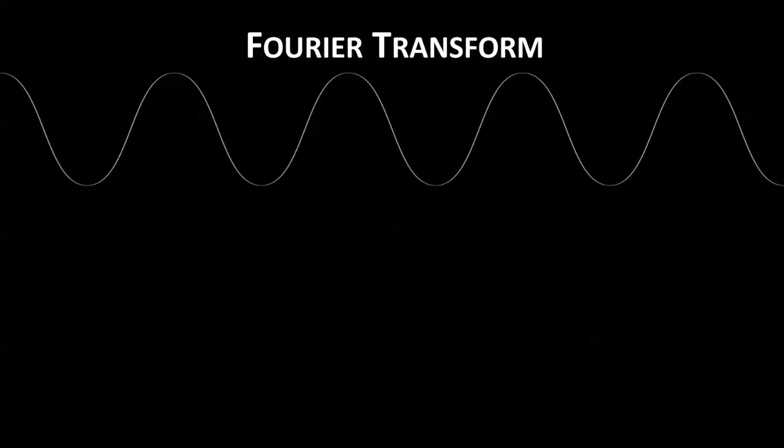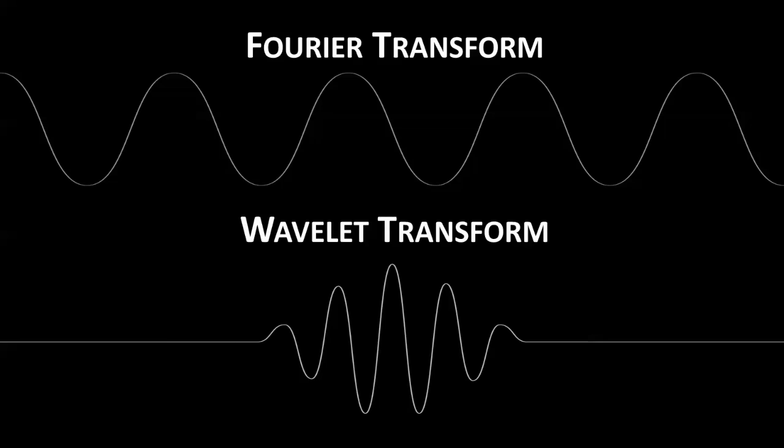From my previous videos, you'll know that the Fourier transform approximates the signal by a sum of sines and cosines. The only difference with the wavelet transform is that you approximate a signal using a sum of short wavelets like the one you see here.